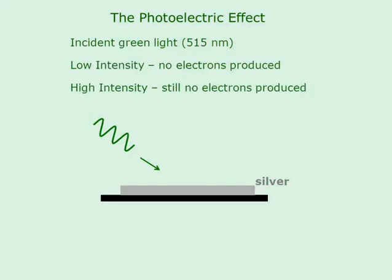Now we change the wavelength of the light to 515 nanometers — this is green, so the frequency is now higher. And again, we get nothing in terms of electrons coming out of the metal, either at low intensity or at high intensity.